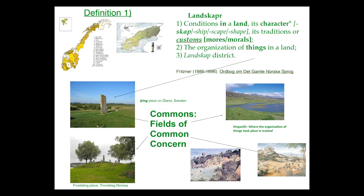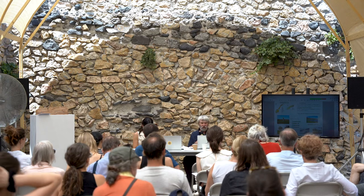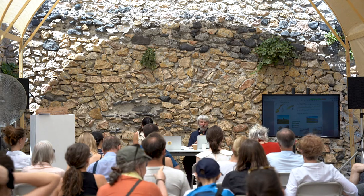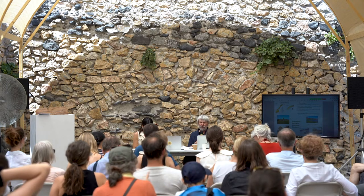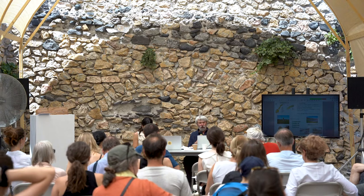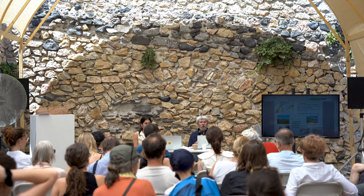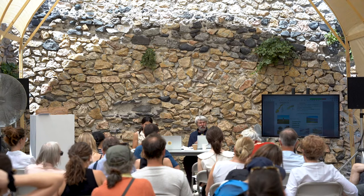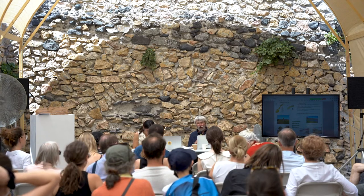If you go back to the old Nordic definition of landscape — the foundation for use of the term in all the Germanic languages, including English — it was 'landskaper': conditions in a land. They use the word 'land' as we would in Scotland — 'the land of the Scots' — it's not soil. It's conditions in a land: traditions or customs. Custom also relates to the notion of mores or morals — it's a moral value as well as a legal value, because customs are a form of law. Customary law is legal; in British-American countries, custom is the foundation of law.